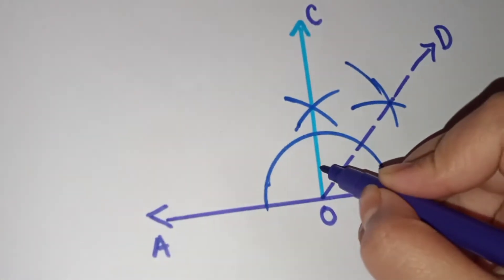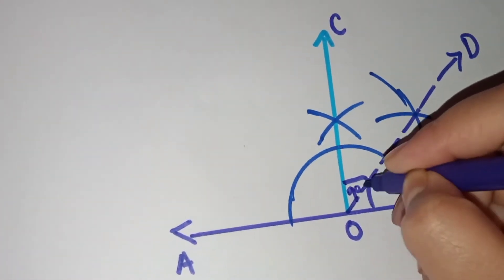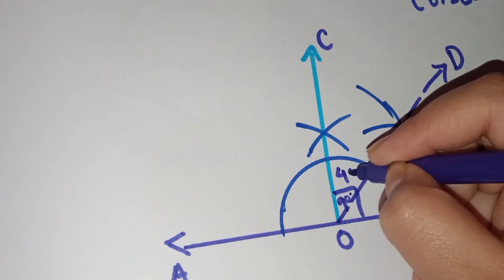So guys, now you understood this is how we have to make the angle of 90 degree. So I'm just writing in here.